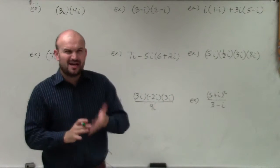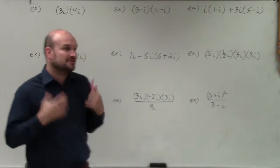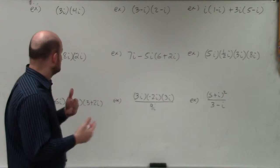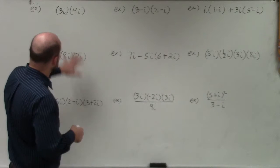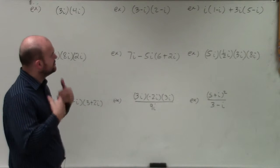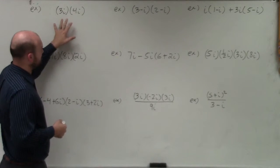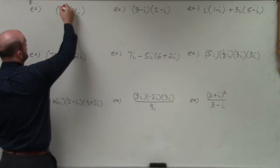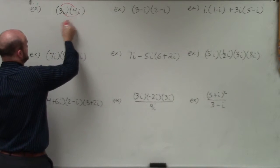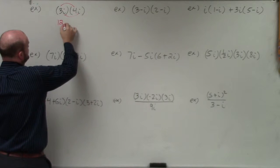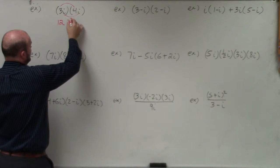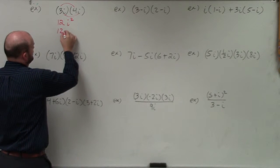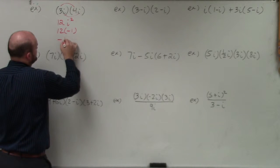I want to bring everything together into some problems where you might have to apply multiplying to a couple different higher orders. So in the first case, just as a review: when we're multiplying complex numbers, the main important thing is we're just going to multiply our real numbers and our complex numbers. So I have 4 times 3, which is going to be 12. i times i is i squared, but we can rewrite i squared as negative 1, so that becomes 12 times negative 1, which is negative 12.